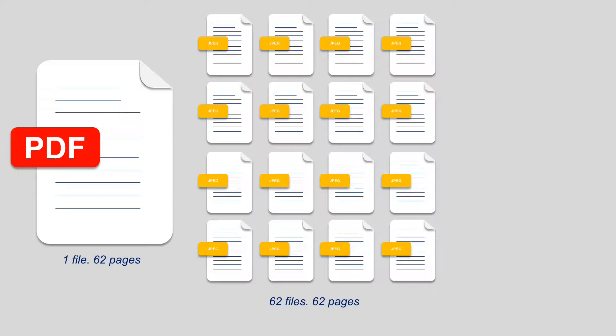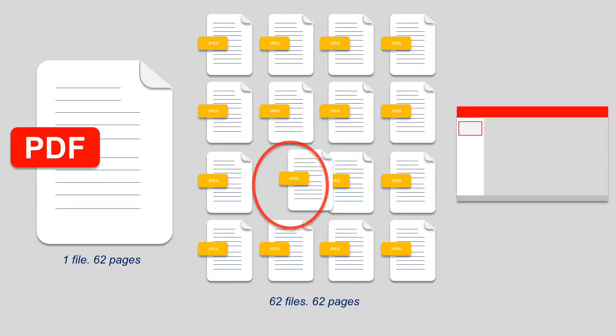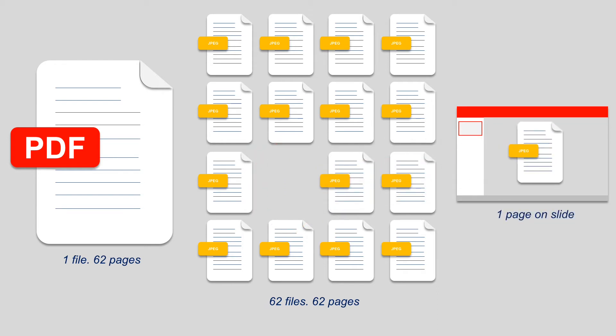I have Adobe Acrobat DC, from before the subscription model. Versions of Acrobat Standard and greater have this capability. All you do is open the PDF, save it as JPEG or TIFF, and then you have what you need. From there you can take the one page you want and put it onto a slide. Let's get started.